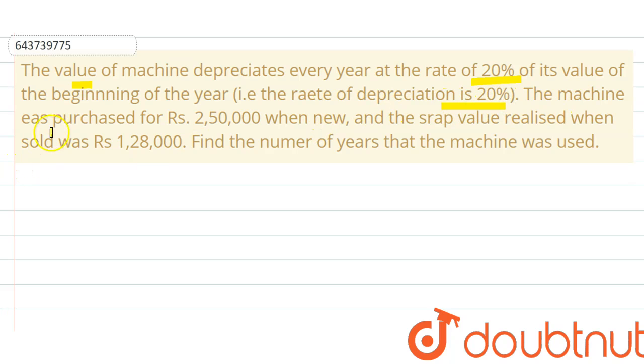Now, machine was purchased for rupees 2,50,000 when new, and the scrap value realized when sold was 1,28,000. That is, reduced value is 1,28,000. Now find the number of years that the machine was used.